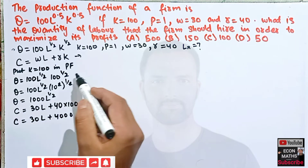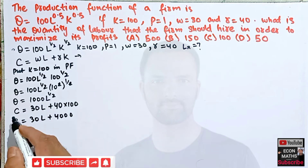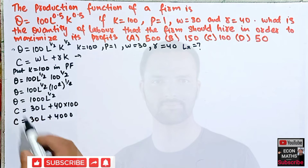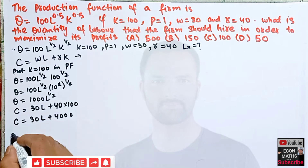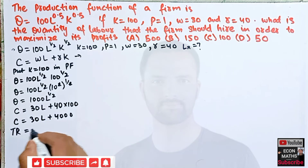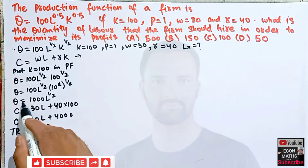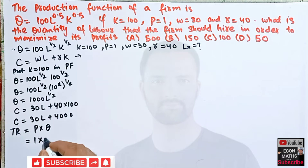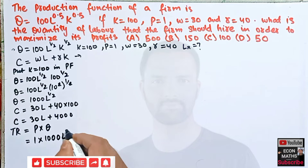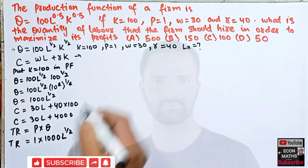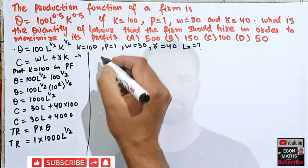After the cost function, we need to find total revenue. Total revenue equals price into quantity. Price P = 1 and Q = 1000L^(1/2), so total revenue TR = 1000L^(1/2).